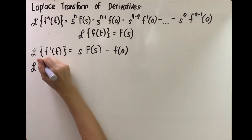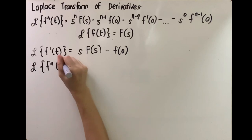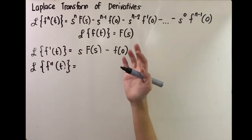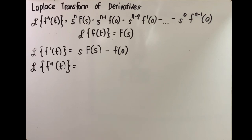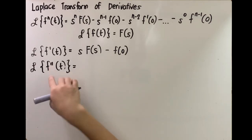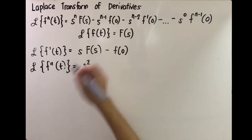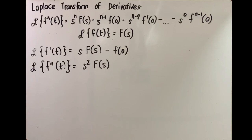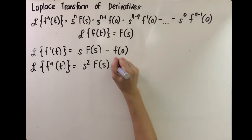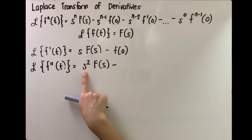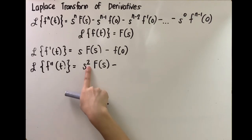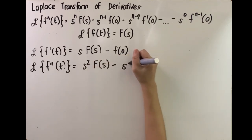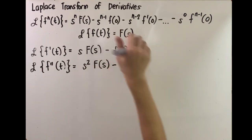Let's get the Laplace transform of f double prime of t — the second derivative — so we start with s squared. Then multiply it by the Laplace transform of the original function, F of s. After that, it is followed by an s term deducted by 1 from the previous term: s raised to 1, that is 2 minus 1, multiplied by f of 0.